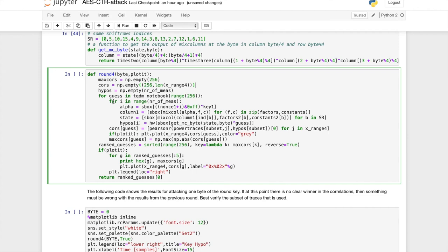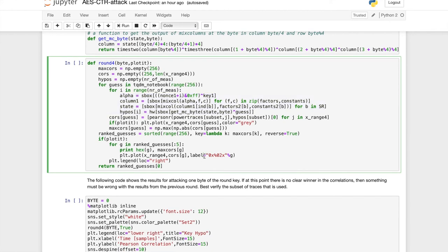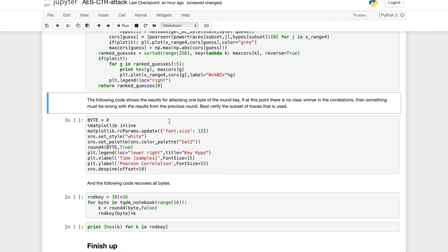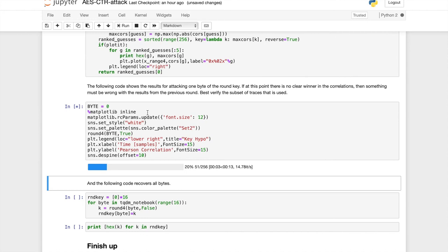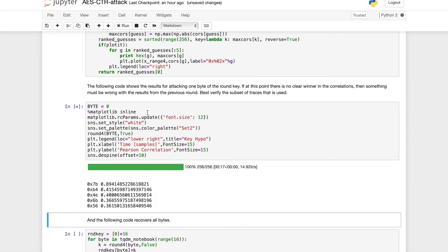We can do the same thing, but this time we're going to actually guess the round keys. The computation of the hypothesis becomes more and more complicated the more we go into the rounds. But it's not that difficult. So again, we need to perform this for each of the 16 bytes of the state. So now we're trying to recover the first byte of the round key in round four.